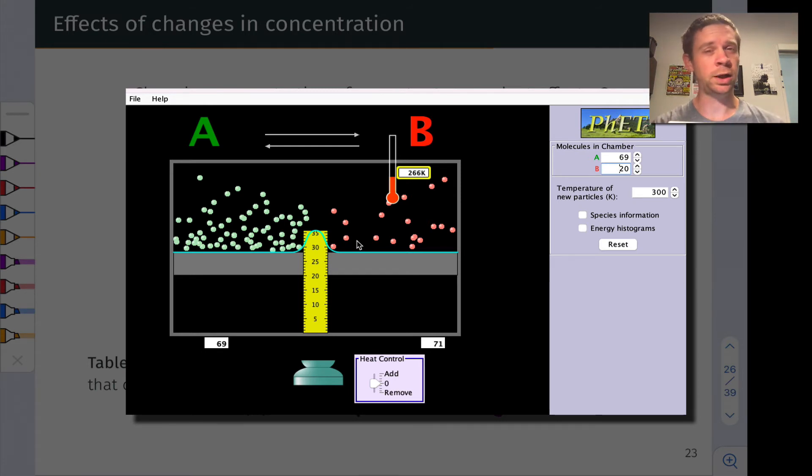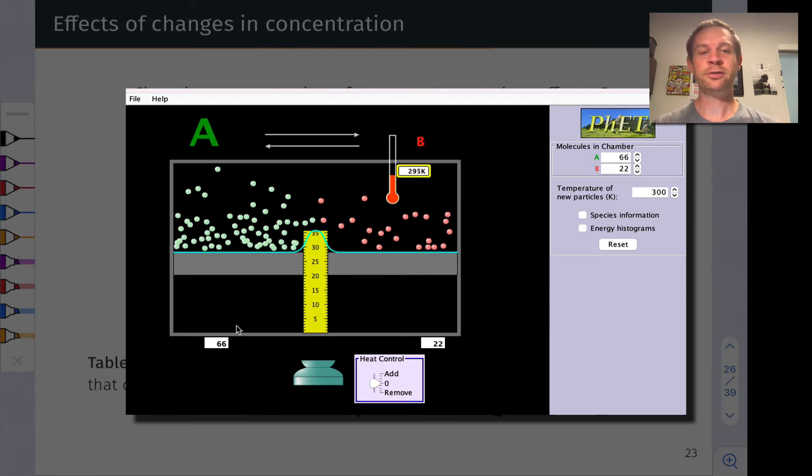The equilibrium constant is equal to one, but in removing a product, I've made Q much less than one. We've gone from 70-70 basically to 20-70, a much lower ratio than one. Watch what happens when I turn the reaction back on and how the system responds.